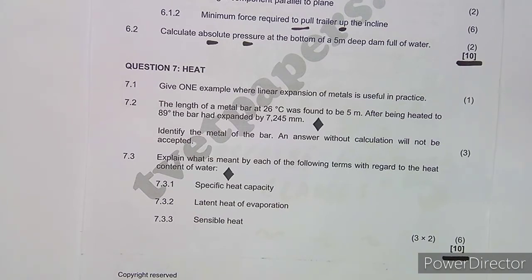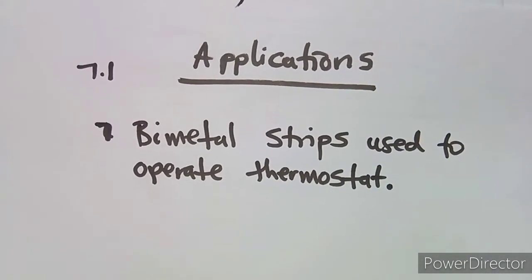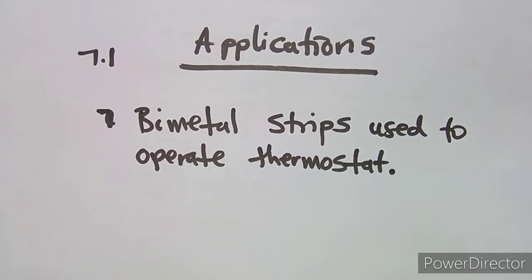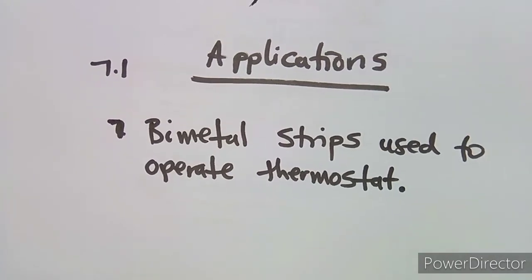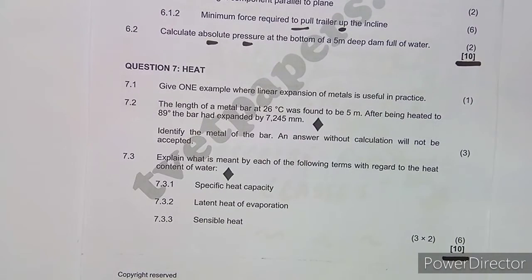For 7.1, we have applications of linear expansion. One example is the bimetal strips used to operate thermostats. Since only one example is required, that answer is sufficient. Now in 7.2, that's where I want us to focus more because there is something important there.